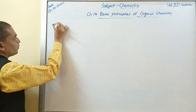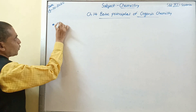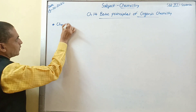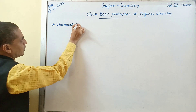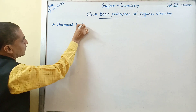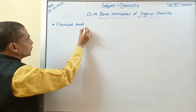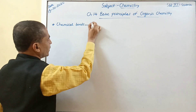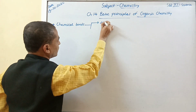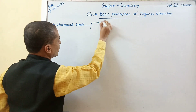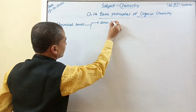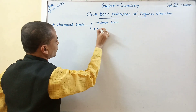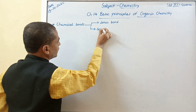First, you must know about the types of chemical bonds. Chemical bonds are of two types. One is called ionic bond, and the second one is called covalent bond.